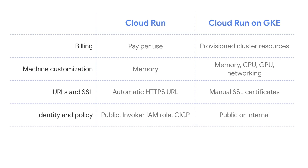Both services let you expose your app to the public internet, but Cloud Run lets you manage which identities are allowed to invoke your services. With Cloud Run on GKE, you can also set your service to be accessed just within your GKE cluster or just within your virtual private network. Finally, only Cloud Run on GKE can access other resources within your virtual private network — this is on the roadmap for Cloud Run.